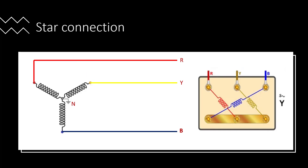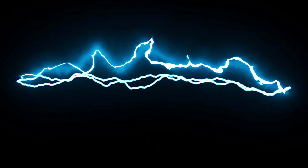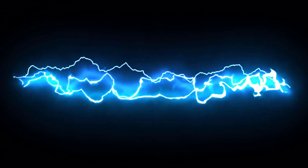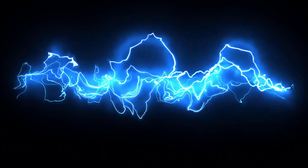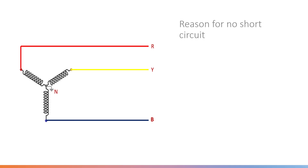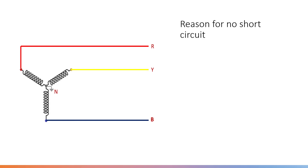When I was studying this subject, a question came into my mind: if two phases are connected together, what happens? There will be a short circuit and an excessive flow of current. So why in star connection is there no short circuit happening? This question came into my mind, and at that time I couldn't find the answer, but I found the answer now. There are three or four reasons.